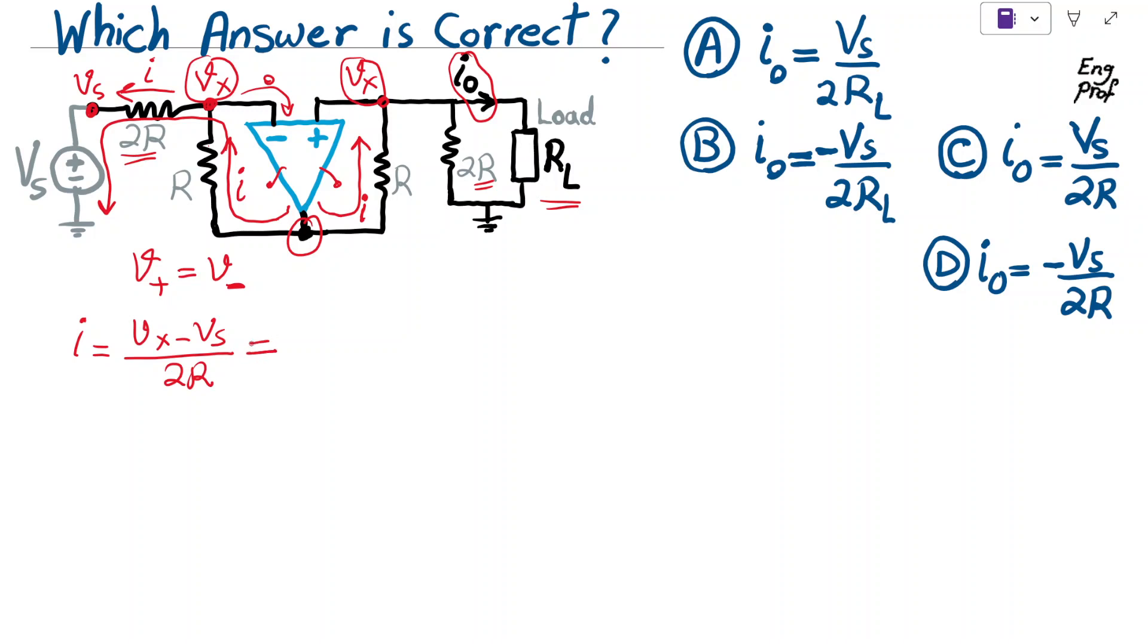On the other hand, this current I is coming this way as well on the right-hand side. Again, cannot go through the positive terminal because a positive terminal has infinite input impedance for ideal op-amp. So the whole current has to flow this way. Now, when it reaches this junction or node, it is branching out into two currents. One is I0, the other one this current.